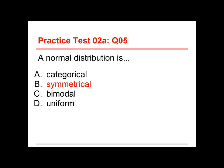Categorical—I just threw that one in. A normal distribution is not categorical; you would use bar charts for categorical variables. Bimodal is if it has two humps, but a normal distribution has only one in the middle. Uniform is totally flat, which is not true for a normal distribution. It's peaked in the middle and tapers down on both sides.